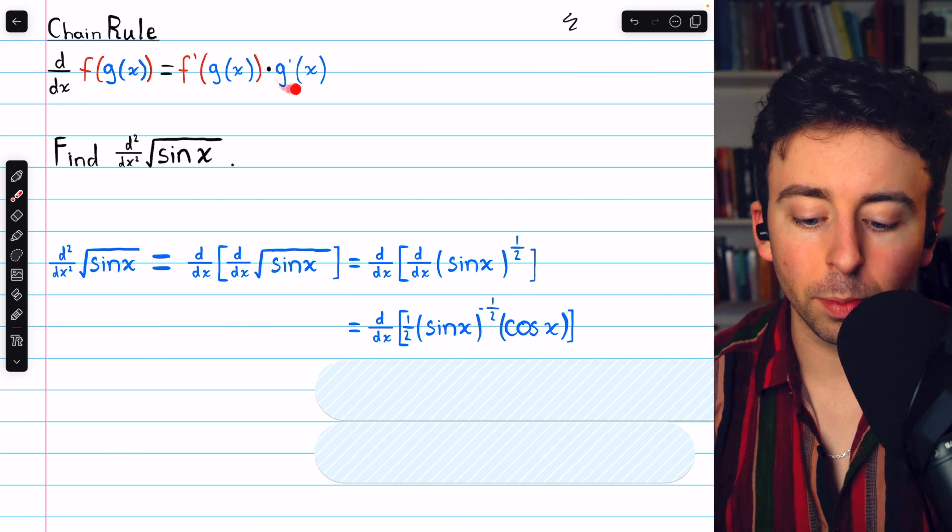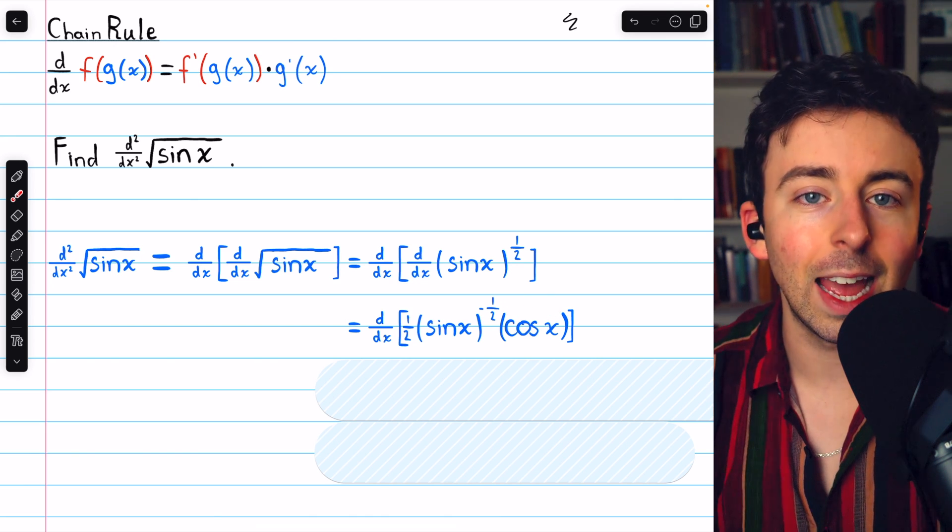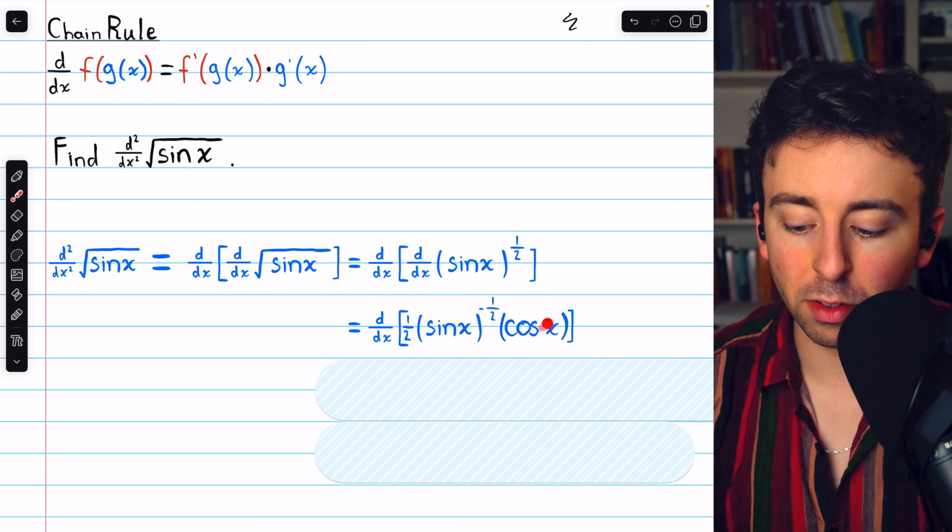We then have to multiply by g prime, the derivative of the inside function, which is cosine x. This is the first derivative.